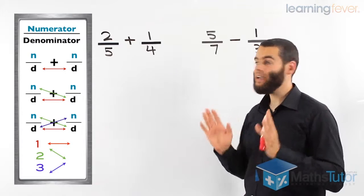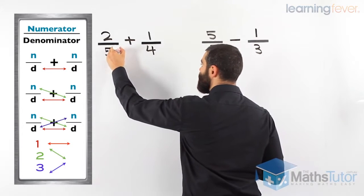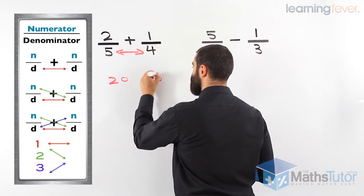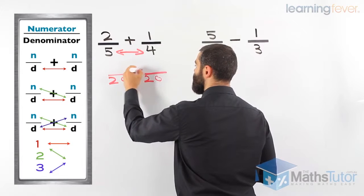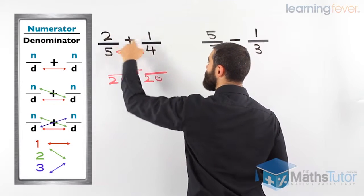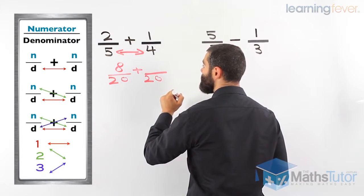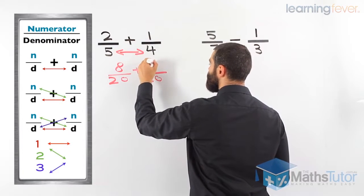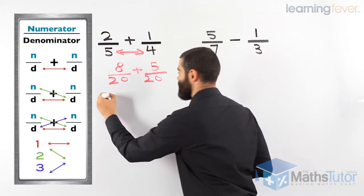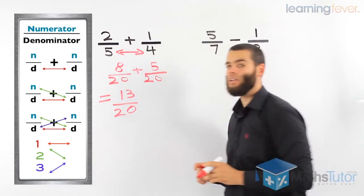Two-fifths plus one-quarter — the denominators are different, so we follow this process. The first step is to multiply the denominators together: five times four is twenty. That is our common denominator. Then, as the green arrow shows, we multiply down: two times four is eight. Next, using the purple arrow, one times five is five. We now have common denominators, so we can simply add the fractions: eight plus five gives us thirteen over twenty as our answer.